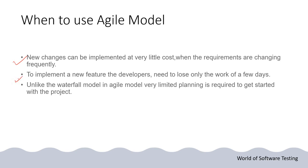To implement a new feature, developers need to lose only the work of a few days. Since the agile release cycle is two to four weeks, maximum only two weeks or one month of work can be lost — which is an added advantage. Unlike the waterfall model, in agile very limited planning is required to get started, because requirements are volatile and can change at later stages.